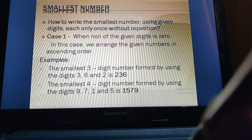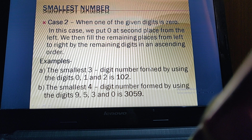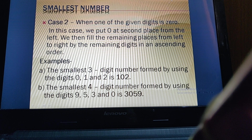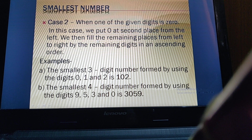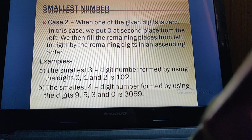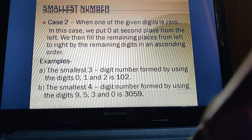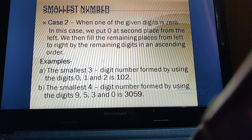Now if zero is among the given digits, we write the smallest number differently. We put zero at the second place — we don't put it at the first place. We fill the remaining places from left to right, arranging the rest of the digits in ascending order from smallest to greatest.